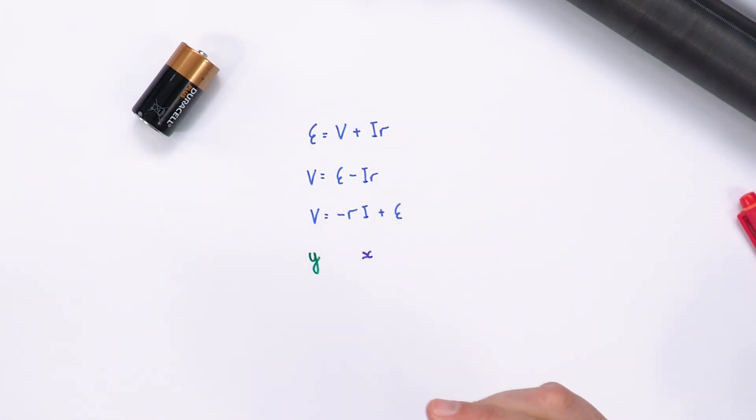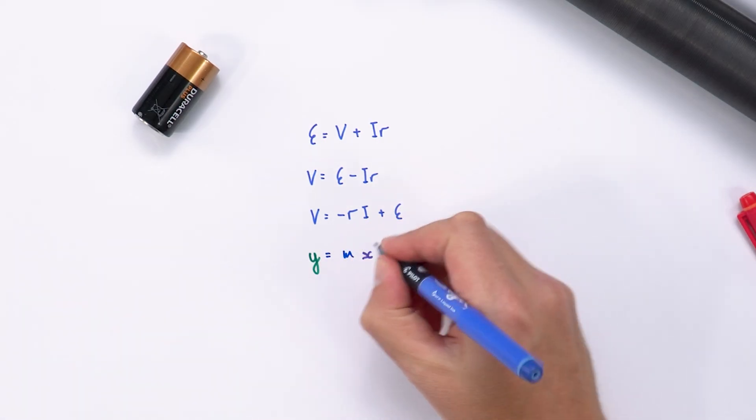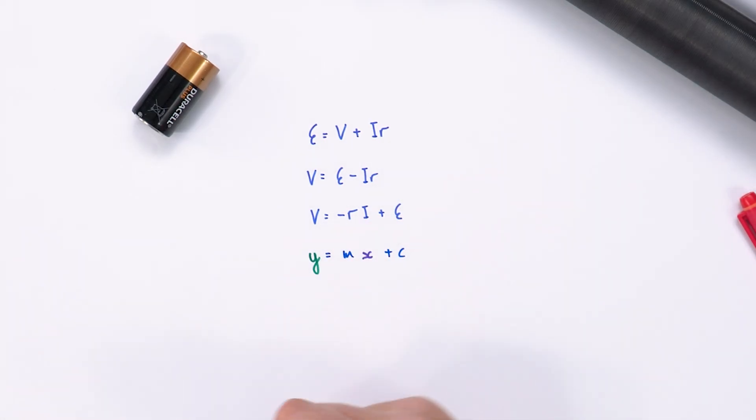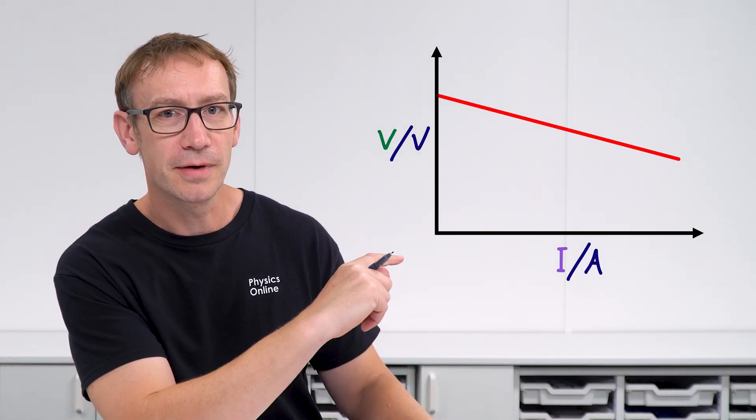And what we then find is when we plot this we get a straight line, and that means Y is equal to MX plus C. And if we actually look at the data what we get is a line with a negative gradient.